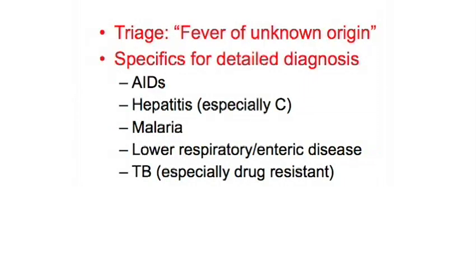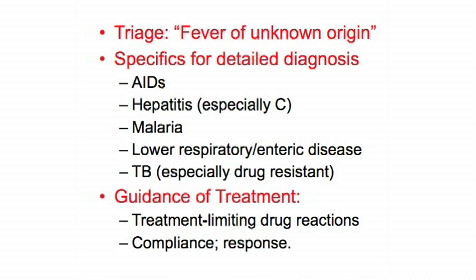The thing we'd most like to analyze — and we're a fair distance from it — is what's called fever of undiagnosed origin. Someone comes into the clinic, they have a fever, they feel bad. What do they have? Do they have TB? AIDS? A common cold? The triage problem. That's hard because there are an awful lot of things to distinguish among. But then there are a series of specific things — AIDS, hepatitis, malaria, TB, and others — and simpler ones such as guidance of treatment.